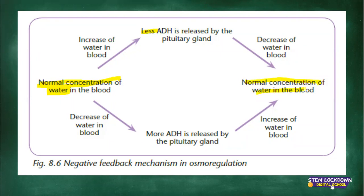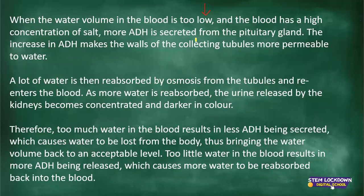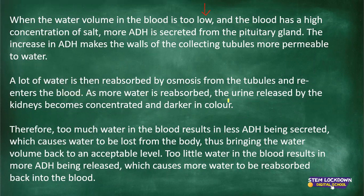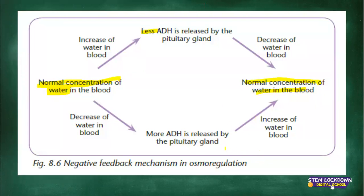In cases where there is a decrease of water in the blood, more ADH will be released by the pituitary gland. That allows the collecting tubules to become more permeable to water. Then a lot of water will be reabsorbed by osmosis from the tubules and re-enters the blood. The urine released by the kidneys becomes concentrated and darker in colour. Because more ADH is released, more water is being reabsorbed into the blood, resulting in an increase of water in the blood back to normal.